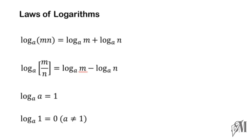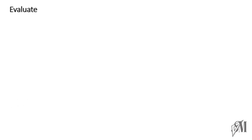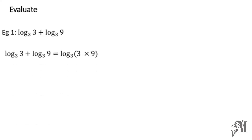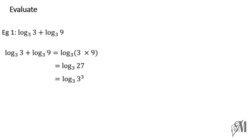Let's move on to questions that can be simplified using these laws. Evaluate log base 3 of 3 plus log base 3 of 9. Since there is a plus sign between the two logarithmic values, by the first law we can write this as log base 3 of (3 into 9). We know 3 into 9 is 27, and 27 is 3 to the power 3, so the answer is 3.